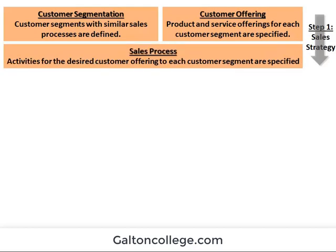And the sales process: activities for the desired customer offerings to each customer segment are specified. It's marrying up the offerings on one side with the segmentation on the other — bringing the two together, knowing the various segments and knowing the various products available and matching the products with the segments. That's the job of the sales team.